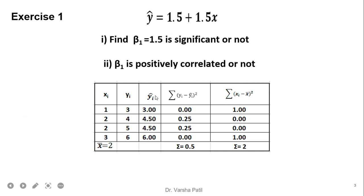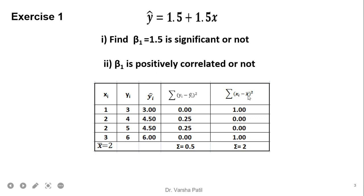To calculate the t-value we require some intermediate calculations. First we calculate y-cap, the predicted value of y, by putting the values of x into the equation. After that we find the residual error, which is the difference between the actual and predicted values. We square them and the summation equals 0.5. We also require the variance with respect to input values, so we calculate x-bar, which is the average of x equal to 2, then subtract each value from the average to get the variance, with summation equal to 2.